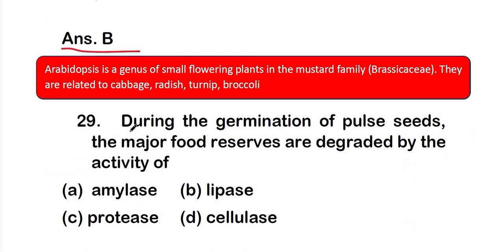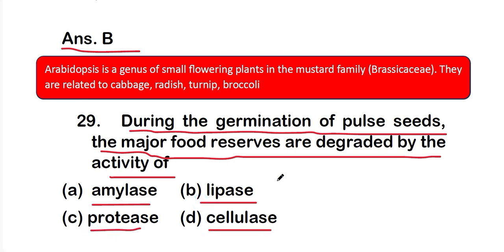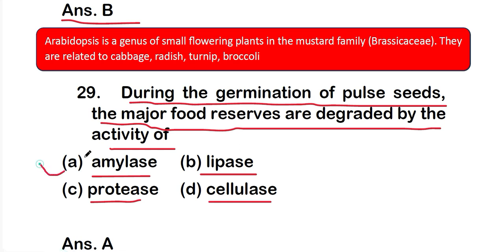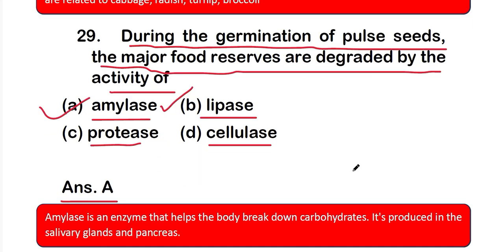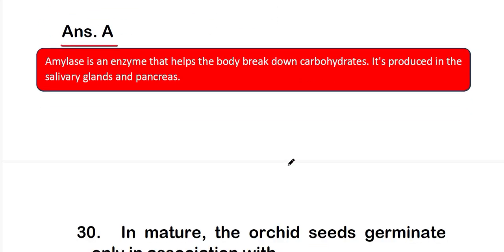Question 29: during the germination of seeds, the major food reserves are degraded by the activity of option A: amylase; option B: lipase; option C: protease; or option D: cellulase. The right answer is option A — amylase. Amylase is an enzyme that helps the body break down carbohydrates and is produced in the salivary glands of the mouth and in the pancreas.